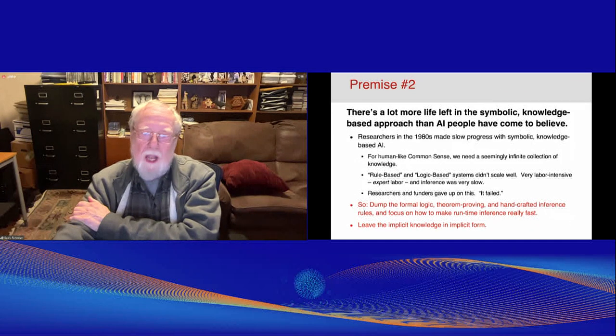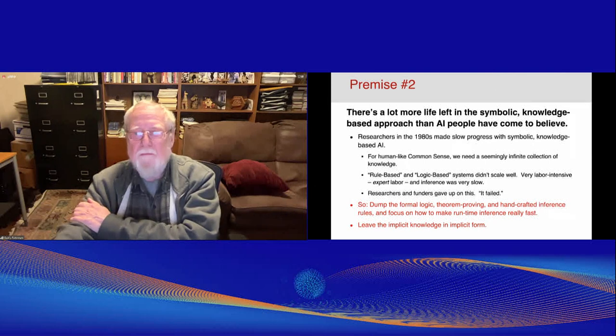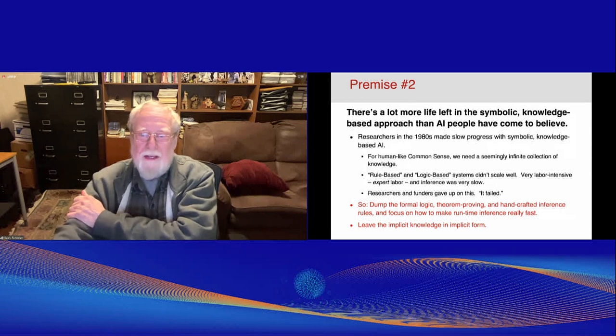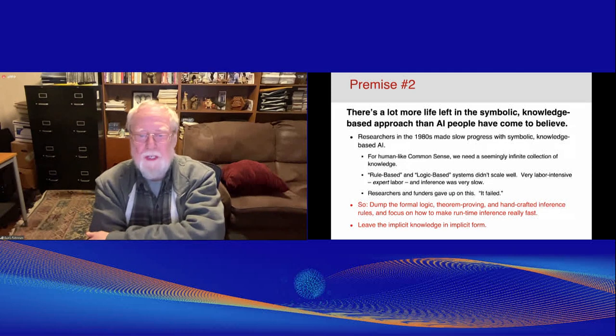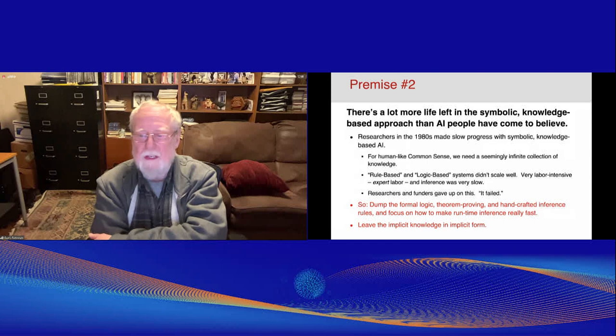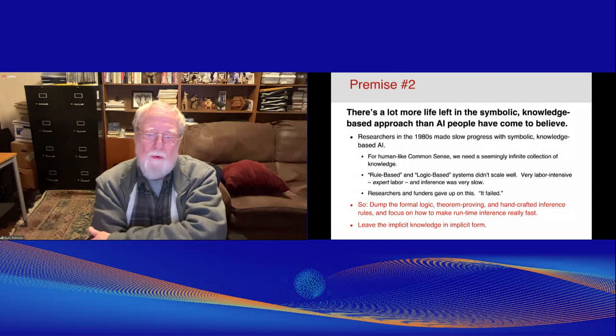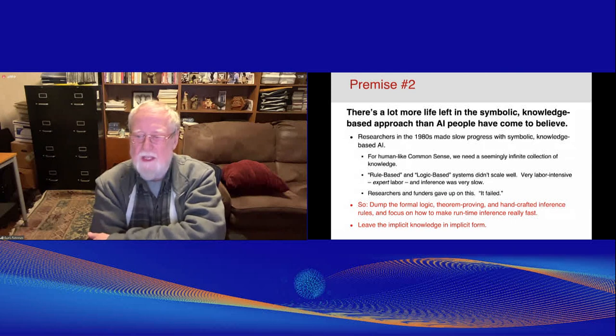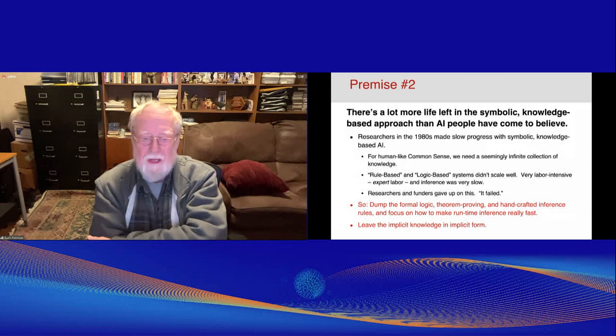Premise number two, there's a lot more life left in the symbolic knowledge-based approach than AI people have come to believe. A lot of people think that as awkward as it is, the large language models are the only game in town. And I'd like to examine where that came from. Researchers in the 1980s made very slow progress with symbolic knowledge-based AI. It was frustrating. For human-like common sense, we need an enormous amount of knowledge, seemingly almost infinite. And rule-based and logic-based systems didn't scale up well. To put the knowledge into these things was very labor-intensive. You needed logicians, ontologists, expert programmers to make the rules. Getting the knowledge in was very slow. You couldn't just tell it things. So researchers and funders finally gave up on this and came to believe it failed. And ever since then, machine learning has been the dominant way of doing AI.